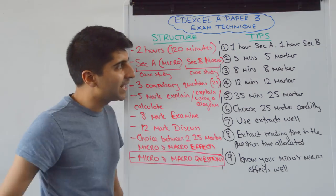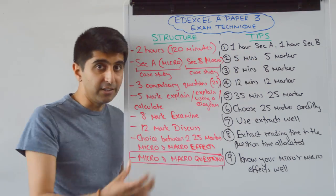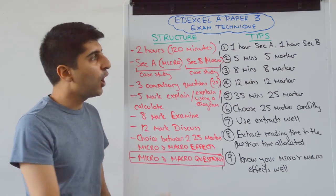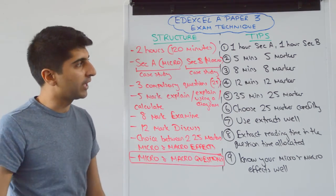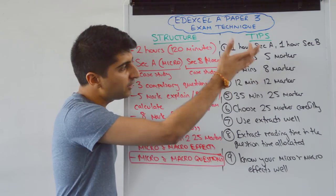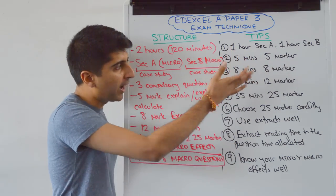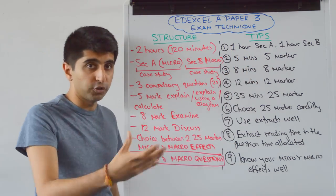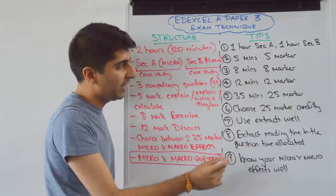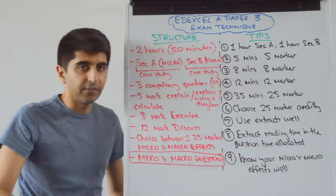What about my key tips? Devote one hour for each section — one hour for Section A, one hour for Section B. That's a logical way of breaking up your time. Then think of it as a minute-a-mark for the shorter questions: 5 minutes for the 5-marker, 8 minutes for the 8-marker, 12 minutes for the 12-marker.